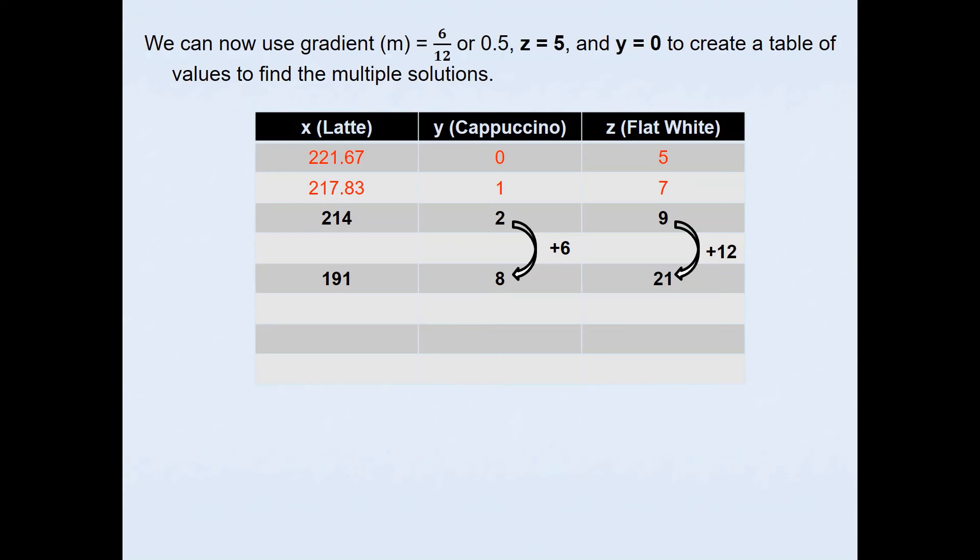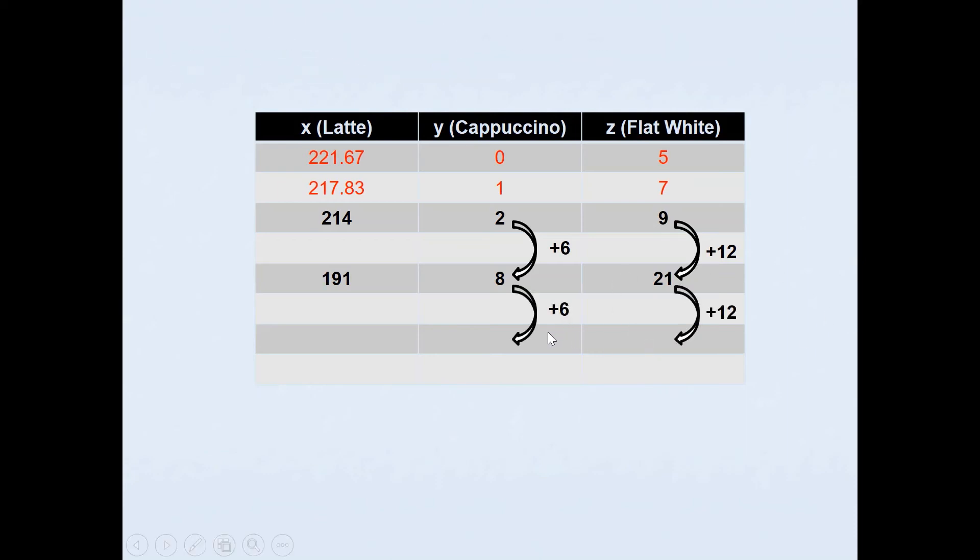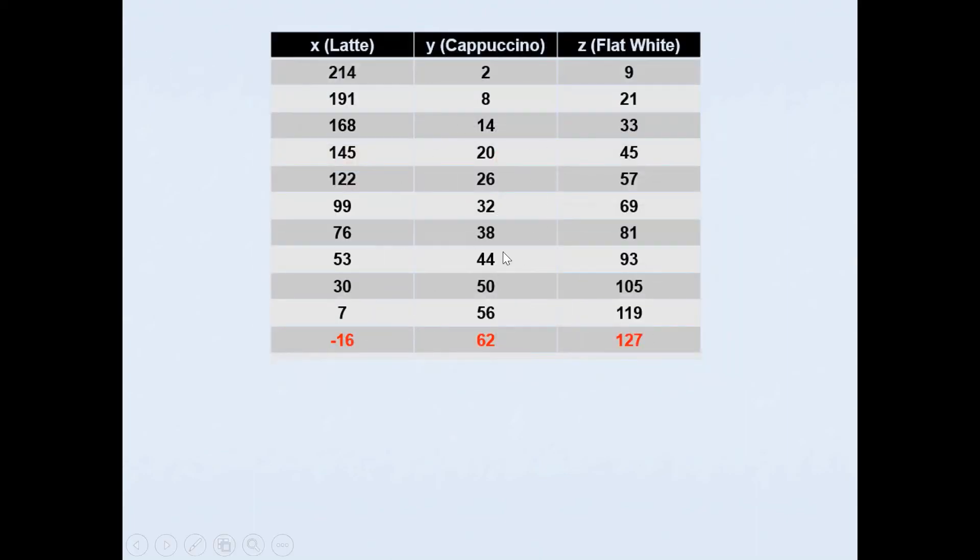The pattern continues. If I add another 6 to 8, I have to add 12 to the flat whites there. That gives me the corresponding values 33 and 14. I don't have to use the first equation to find the X values because I can see a pattern here - every time it's reducing by 23. So I can use that analogy to find the other possible solutions. If I repeat the pattern, I will be able to fill in this table. I'd suggest if you can pause the video and fill in the table yourself.